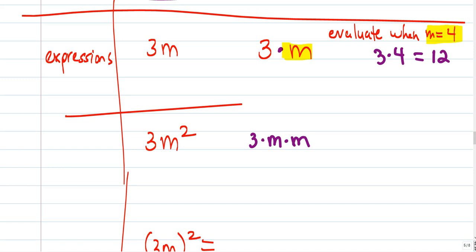So, I could evaluate that when M equals 4, and this would just become 3 times, and everywhere there's an M, we would replace it with a 4. Then, we can evaluate that. 3 times 4 is 12. 12 times 4, I believe, is 48.